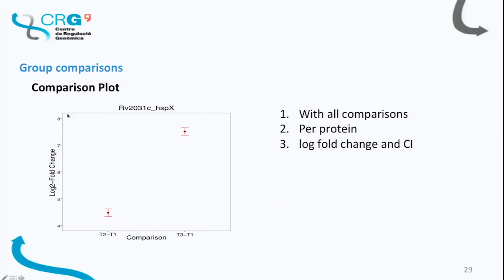A comparison plot represents log fold changes with 95% confidence intervals for each comparison. This differs from the condition plot seen earlier, which represented log2 heavy-to-light ratios. Here we see the estimated log fold change plus or minus the 95% confidence interval for each comparison.